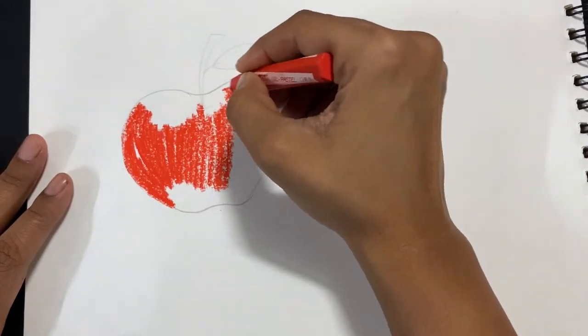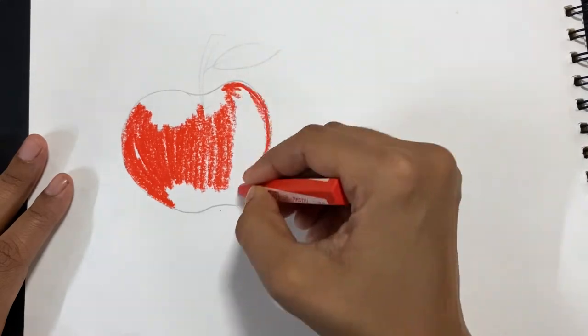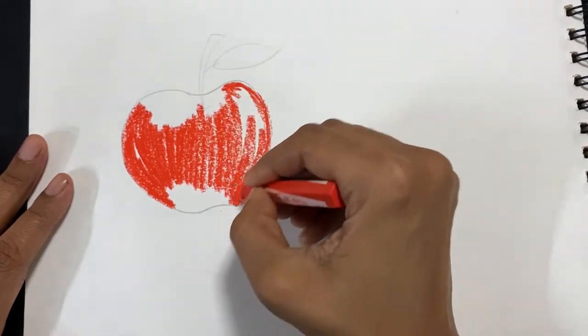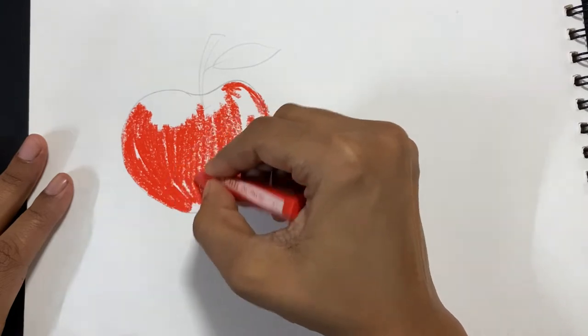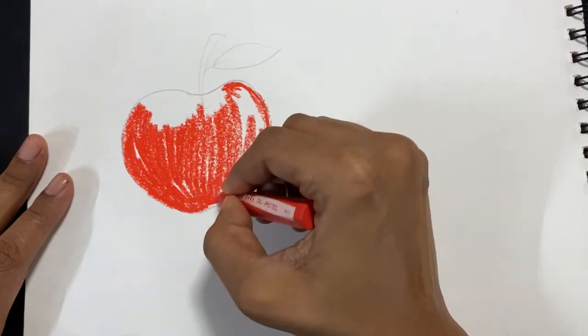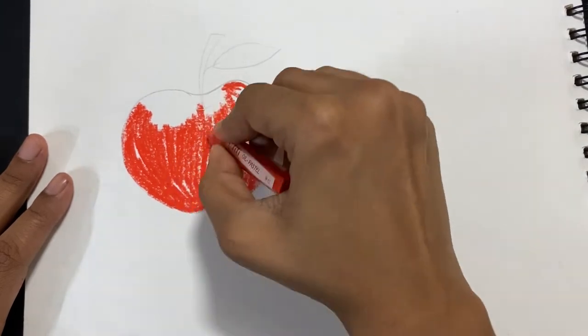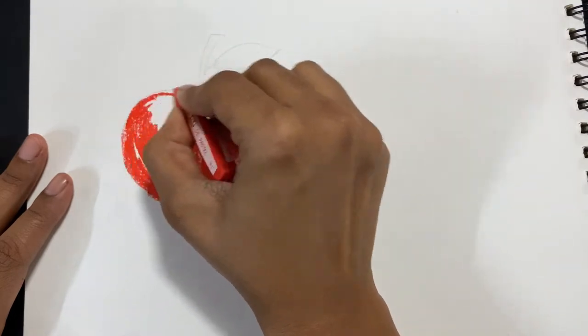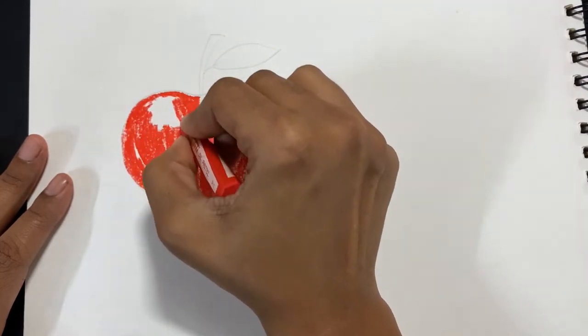Whenever you're doing any kind of coloring, you don't have to use the exact same color. If you look at an apple in real life, it doesn't have one single color throughout - it has multiple colors, a mix of colors, and it gives a nice shine on one side if there is some light.